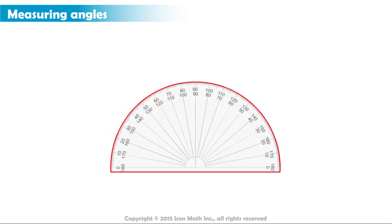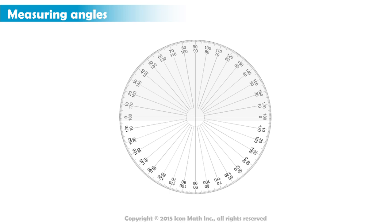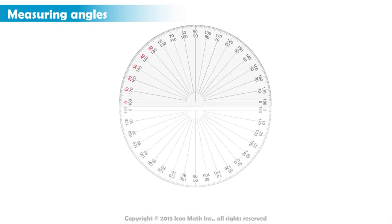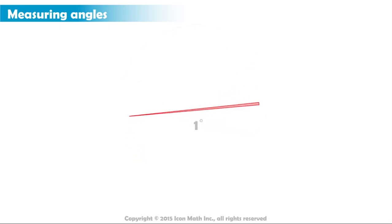Notice that the shape of the protractor is half of a circle. So if we put two protractors like this, we will have a full circle. How many equal parts do we have? We have 180 here and another 180 here, making a total of 360 equal parts. So each part represents a degree.